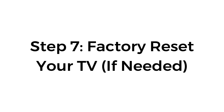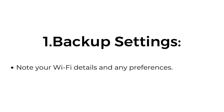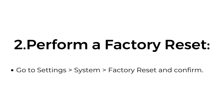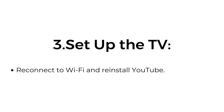Step 7: Factory Reset your TV if needed. First, backup your settings — note your Wi-Fi details and any preferences. Then go to Settings > System > Factory Reset and confirm. Once complete, reconnect to Wi-Fi and reinstall YouTube.